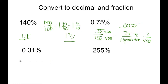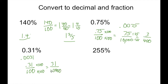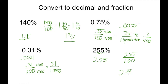For 0.31%, we move our decimal point over twice — one, two — giving us 0.0031 as the decimal. Then we put it over 100, multiply both by 100, giving us 31 over 10,000, which can't be simplified. For 255%, we move the invisible decimal point — one, two — giving us 2.55 for our decimal. And 255 over 100 for the fraction, which gives us 2 and 55 one-hundredths. We divide by 5, which gives us 11 twentieths.